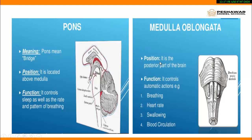The medulla oblongata is the posterior part of the brain. Its function is to control automatic actions such as breathing, heartbeat, swallowing, and blood circulation — all involuntary or automatic functions are controlled by the medulla oblongata.